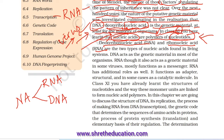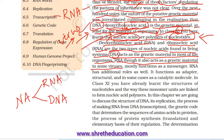DNA and RNA are the two types of nucleic acids found in living systems. DNA acts as a genetic material in most of the organisms. RNA also acts as a genetic material in some viruses — so in those viruses, RNA is the genetic material.